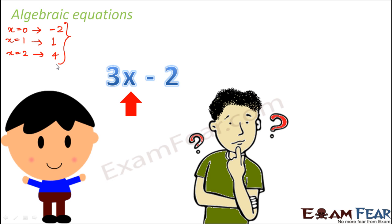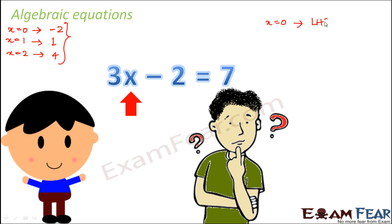Now we make a slight change. Instead of just the expression, you are given: 3x minus 2 is equal to 7. Now if I ask you, can you find out the value of x? The moment we enter this equality sign, the entire meaning changes. If we put x is equal to 0, the left hand side is 3 into 0 minus 2, that is minus 2. But I am saying the value of this expression should be equal to 7, so x can never be equal to 0.